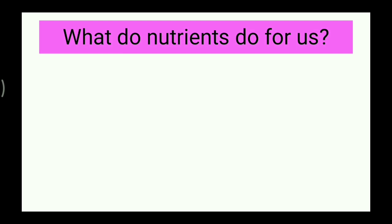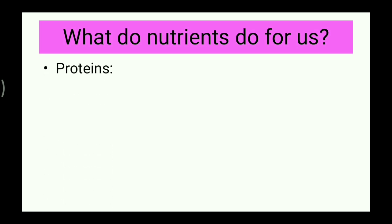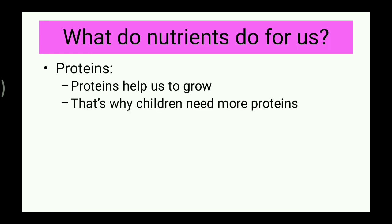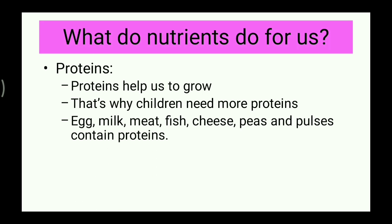The next nutrient we are going to study is proteins. Proteins help us to grow. That's why children need more protein — at their age they are growing and they require proteins for that growth. Eggs, milk, meat, fish, cheese, peas, and pulses all contain proteins. We should have one or two of these in our daily meals because we require proteins to grow.